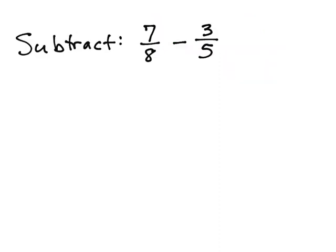Now let's get into some problems where our denominators do not match. So I have 7 eighths minus 3 fifths. Obviously, those are not the same. So I need to find a number that 8 and 5 go into evenly.